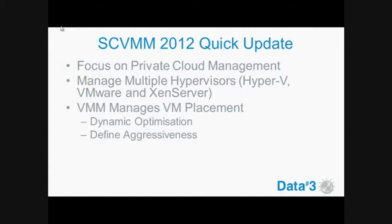The way it does that is by managing placement using a concept called dynamic optimization, and you can define how aggressive that is. So we might say if we've got a really aggressive optimization policy, when there's 30% free memory on a particular host we need to start moving virtual machines around. Or we could have something less aggressive and say when there's only 10% free memory, then we start to move virtual machines around.